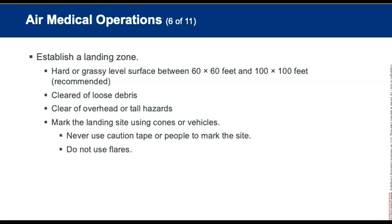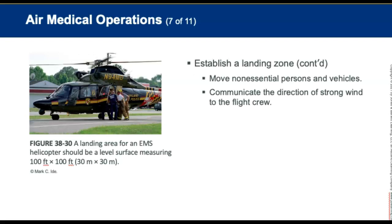Establishing a landing zone is the responsibility of the ground EMS crew. The safest approach is similar to fixed-wing aircraft, landing at a slight angle. An appropriate landing zone should be a hard or grassy level surface of 100 by 100 feet, with a minimum of 60 by 60 feet. Clear all loose debris and overhead hazards. Mark the landing site using weighted cones or emergency vehicle headlights facing inward at the corners to form an X. Never use caution tape, people as markers, or flares. Move non-essential persons and vehicles outside the landing zone and communicate wind direction to the flight crew.